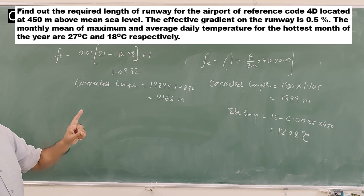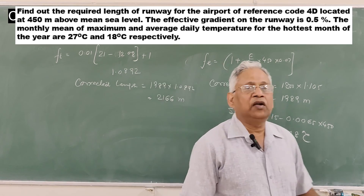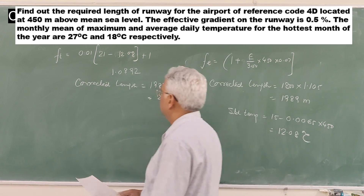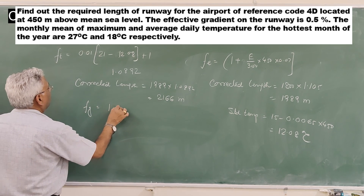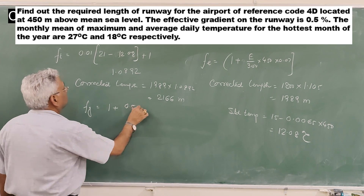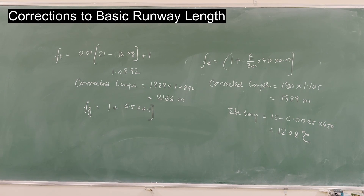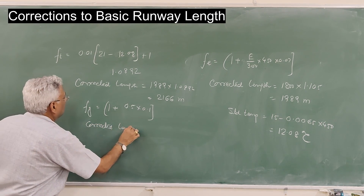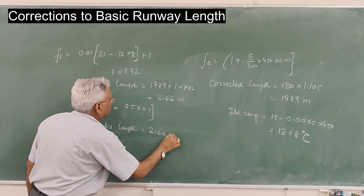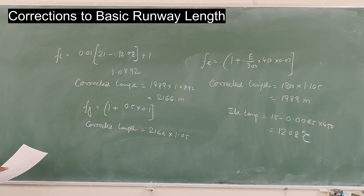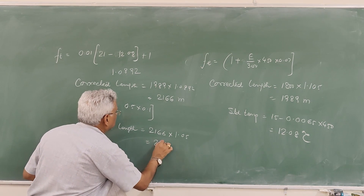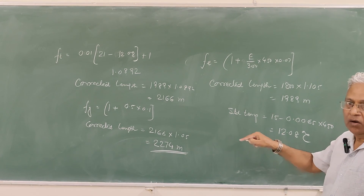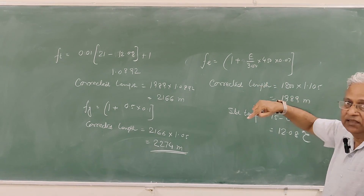The third correction is for gradient. The gradient given is 0.5%. The correction for gradient is 10% for every 1% gradient. Therefore, correction factor FG = 1 + 0.5 × 0.1 = 1.05. Corrected length = 2166 × 1.05 = 2274m. This is the final required length of runway to be provided at the airport located at 450m above sea level.